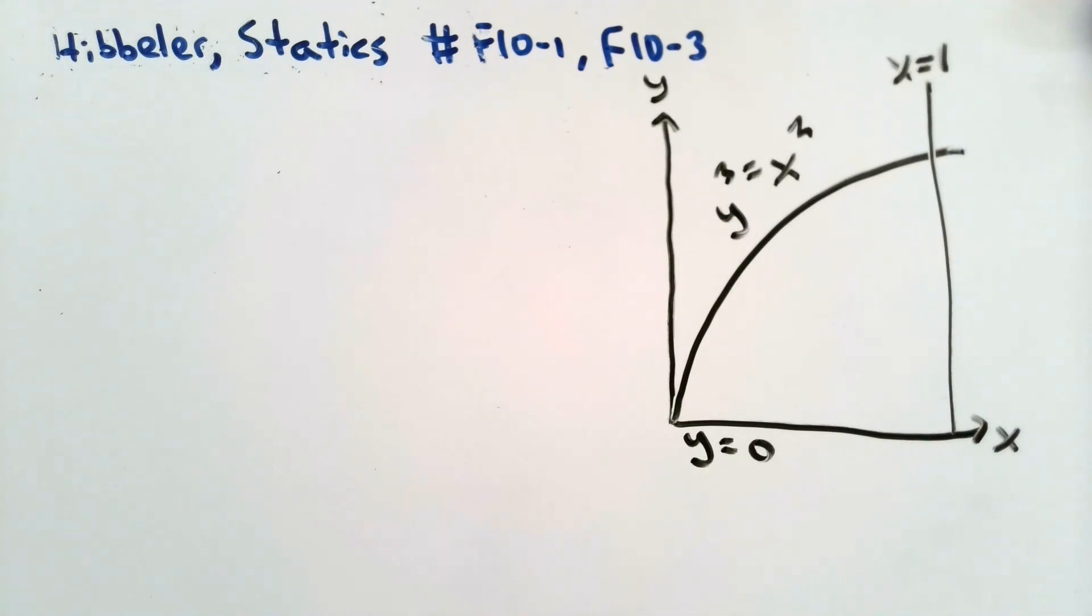In both problems, we are given a shape that is bounded by the lines y cubed equals x squared, x equals 1, and y equals 0.